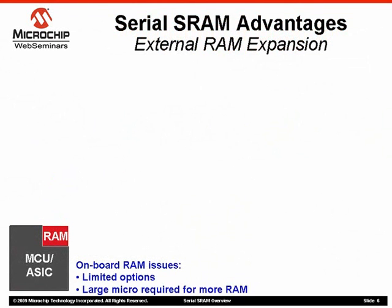To understand the advantages of Serial SRAM, let's assume an application that requires a large amount of RAM. The easiest way to get it is to use a micro with RAM onboard. As I mentioned earlier, even high-end 8-bit micros have less than 8K bytes of RAM, and most use much less. What if you need more, or what if you want to increase the functionality of a current design but you need more RAM to do it? What are your options?